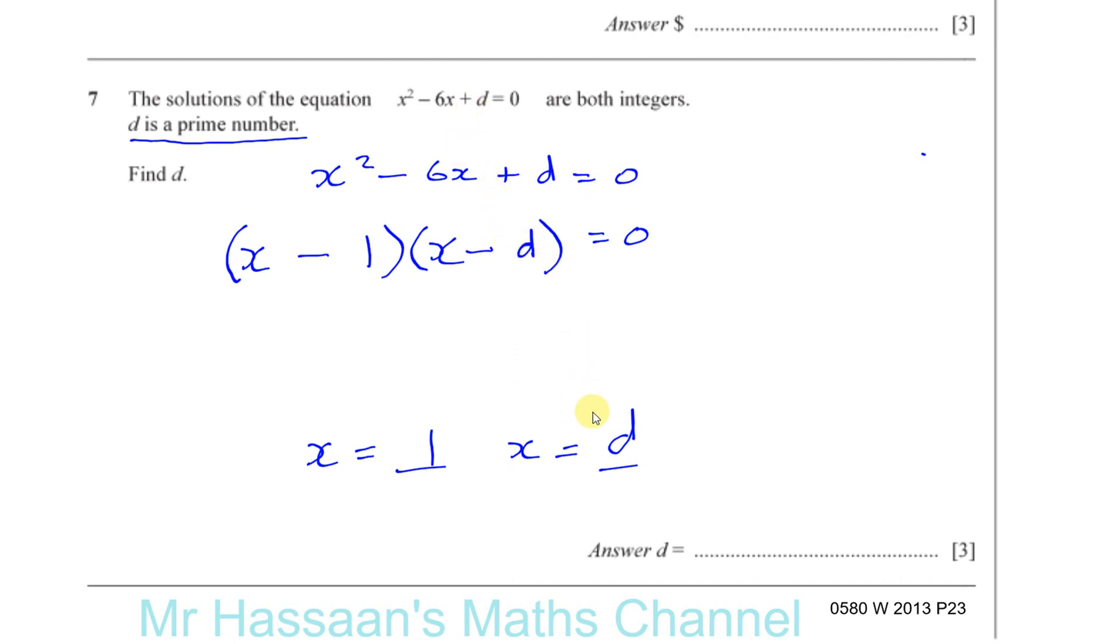Now that will give you plus d. So we've got to think of two numbers. When we multiply them, we get d. And when we add them, we get minus 6. So these two numbers here, if I add them together, I'm going to get minus 6. So I know that minus 1, and then if I add to that another minus 5, I'm going to get minus 6. And if I multiply minus 1 and minus 5, I'm going to get plus 5. So this d must be a 5 here.